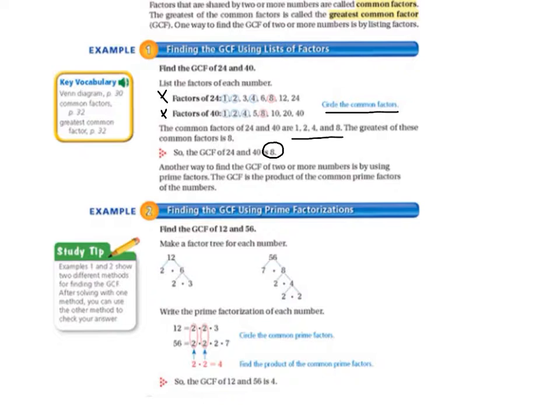Another way to find the GCF of two or more numbers is by using prime factors. This is really helpful when you get into larger numbers and you don't want to make factor rainbows for giant numbers. The GCF is the product of the common prime factors of the numbers. So that's an important thing to remember. This is kind of a new skill for you.